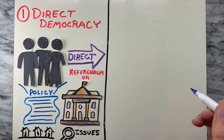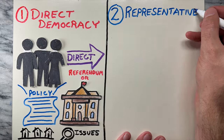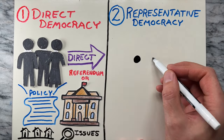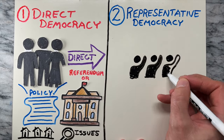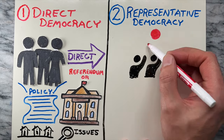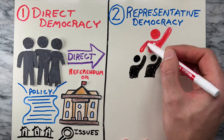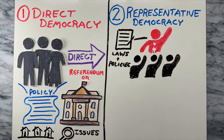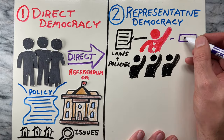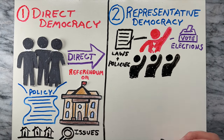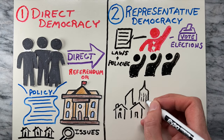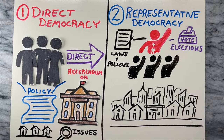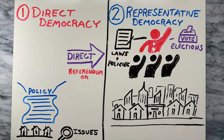Next is representative democracy, or indirect democracy. In this type of democracy, citizens elect representatives to make decisions on their behalf. These representatives create laws and policies, and they are held accountable through periodic elections. Representative democracies are more common in larger, complex societies.